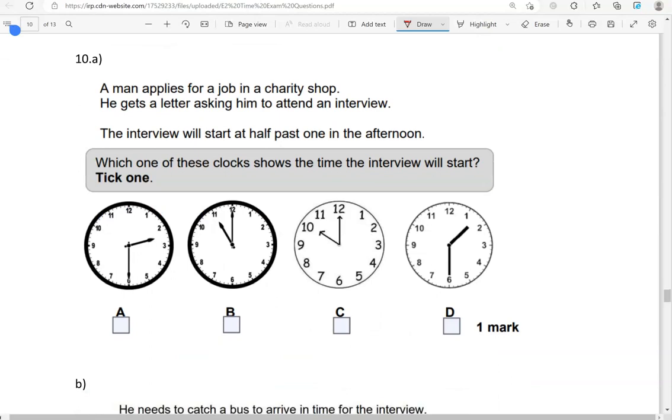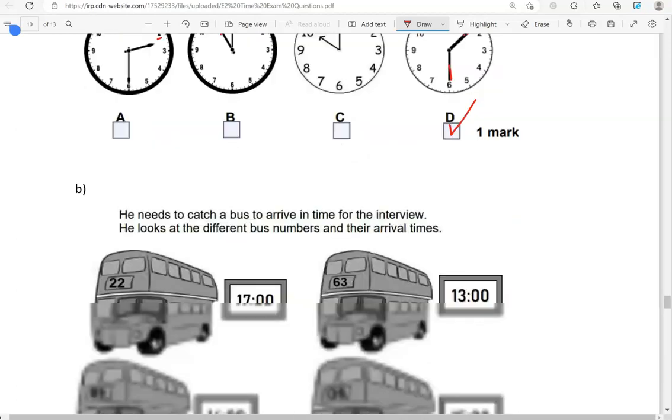A man applies for a job in a charity shop. He gets a letter asking him to attend an interview. The interview will start at half past one in the afternoon. Which one of these clocks shows the time the interview will start? Tick one. Option A shows half past two. Option B shows 11 o'clock. Option C shows 10 o'clock. Option D shows half past one, which is the one we're after. So, option D is the only correct one.